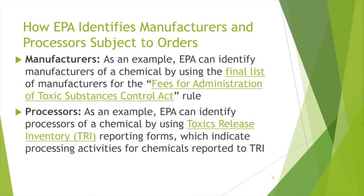Under TSCA Section 3, EPA identifies the manufacturers and processors subject to orders. There is no required method for EPA to use when identifying manufacturers or processors for a given chemical.